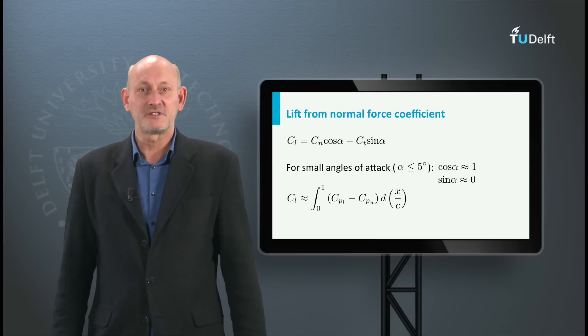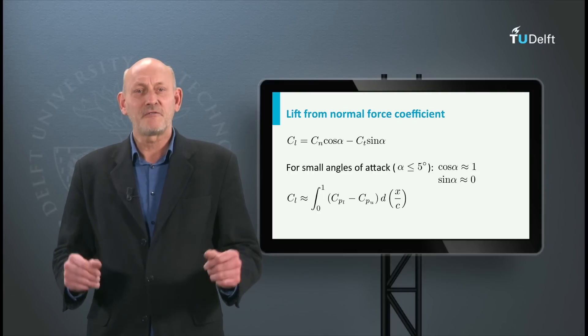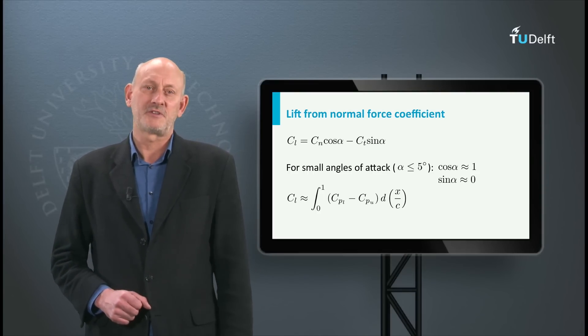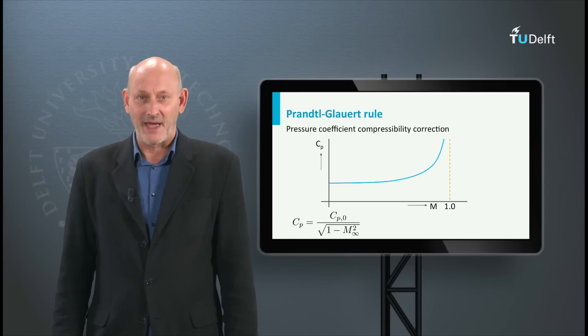So now we can derive the lift coefficient from the pressure distribution. But how can we incorporate the effect of compressibility on the lift coefficient? We can do this with the Prandtl-Glauert correction based on the Mach number.